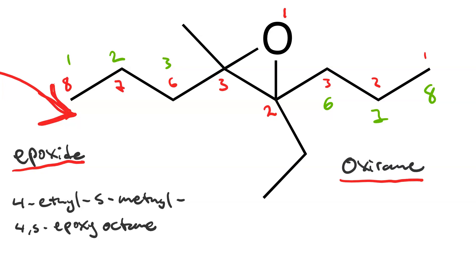And so we have 2-ethyl, 3-methyl, 2,3-dipropyl oxirane.